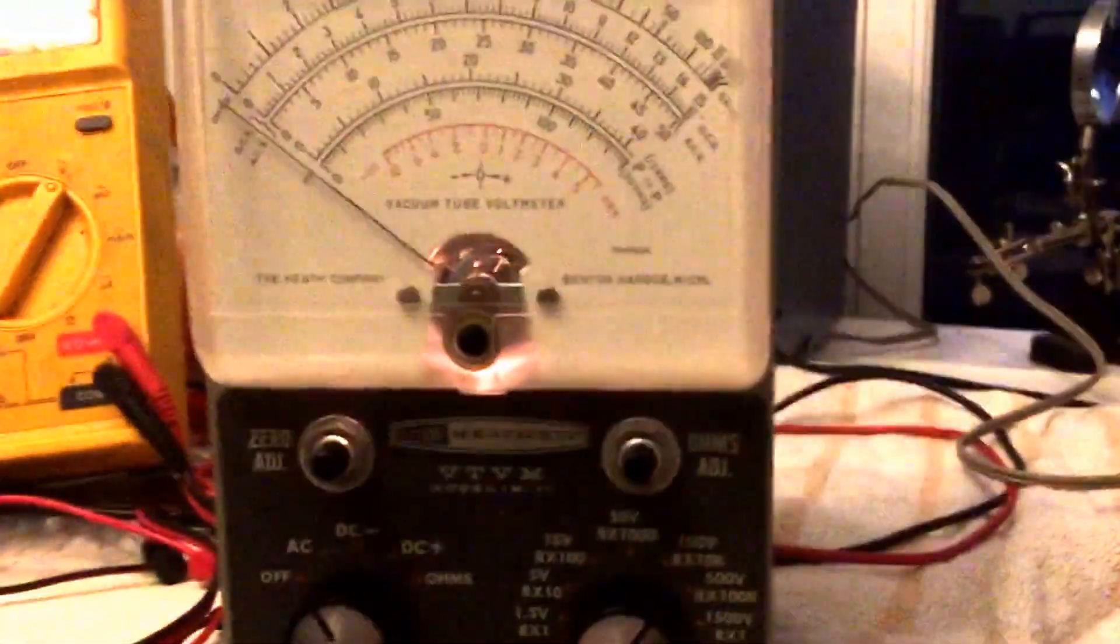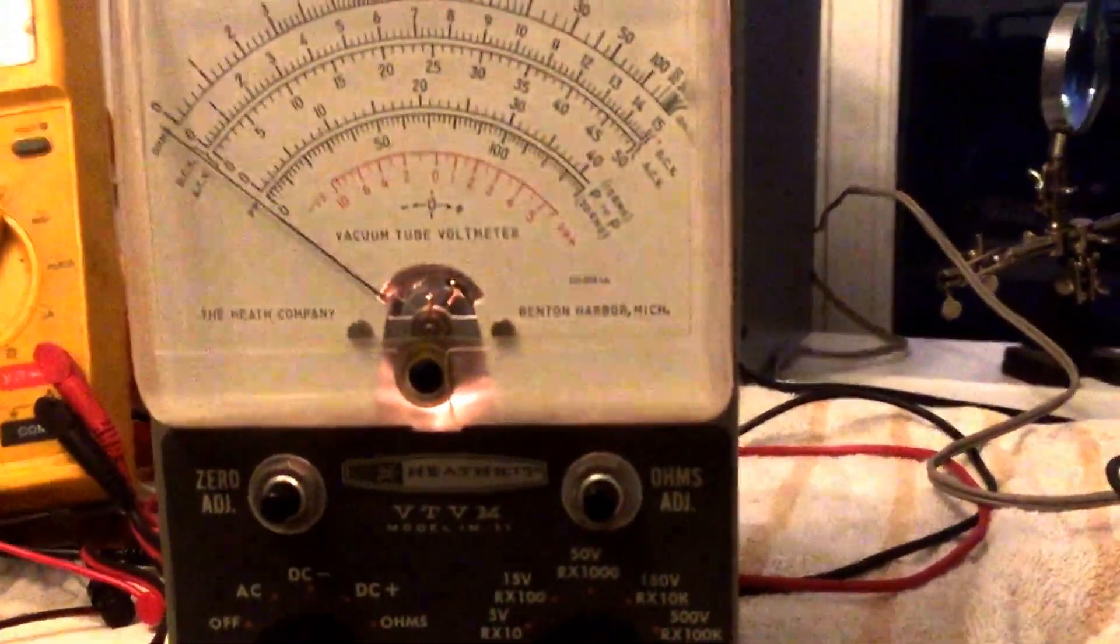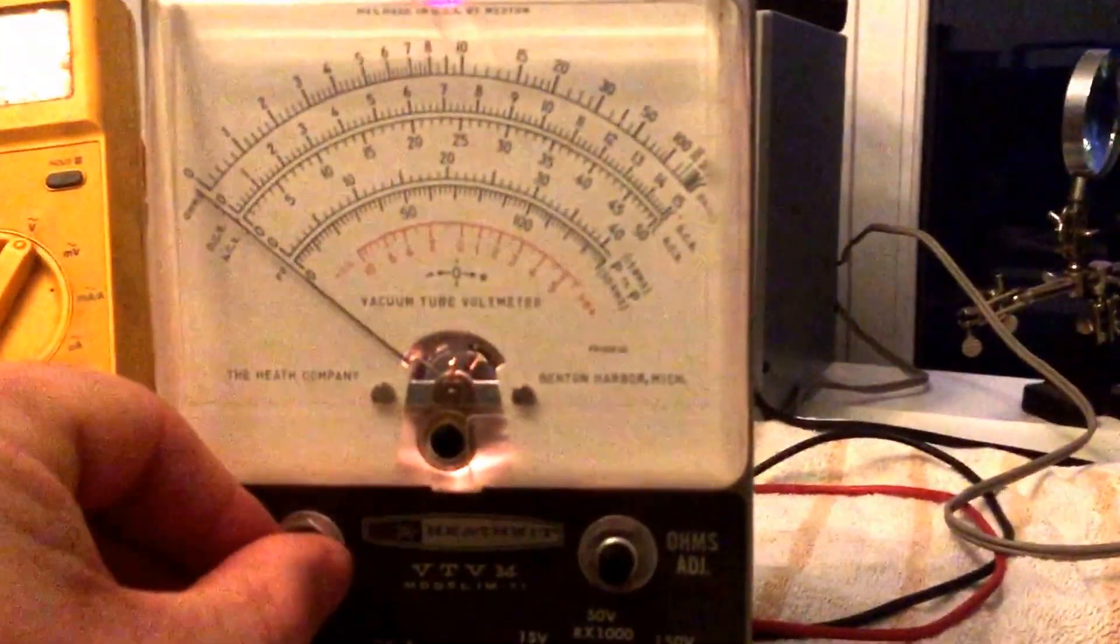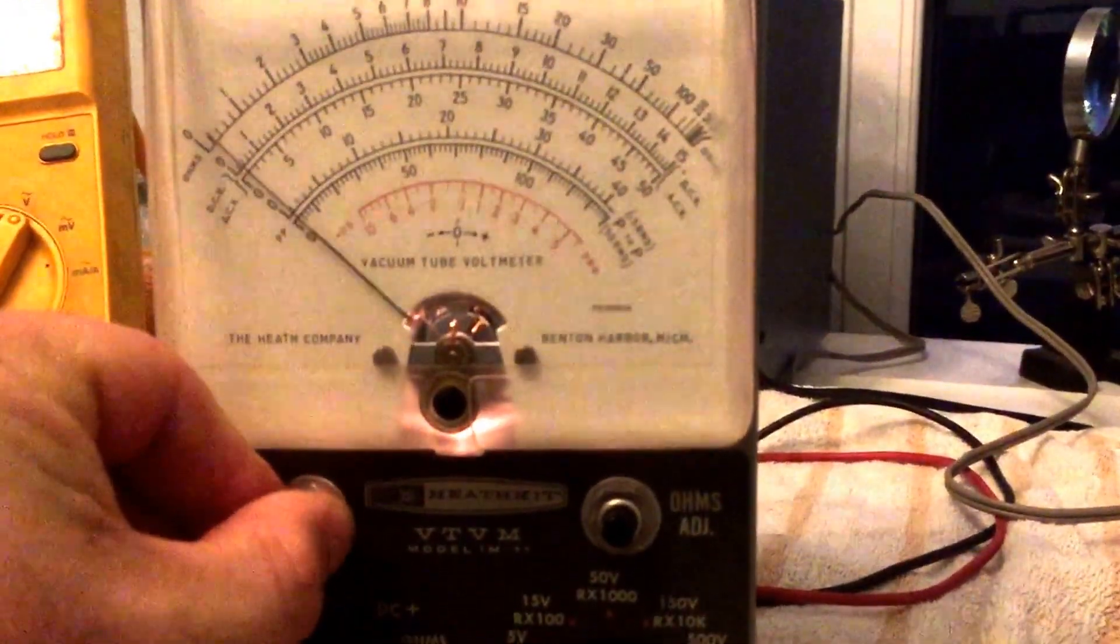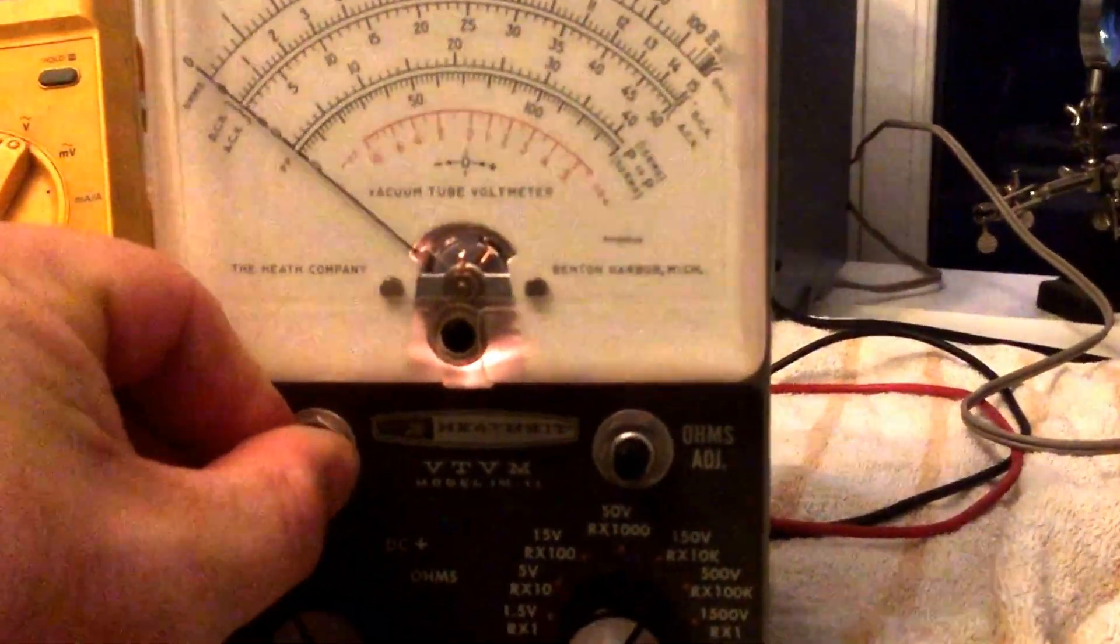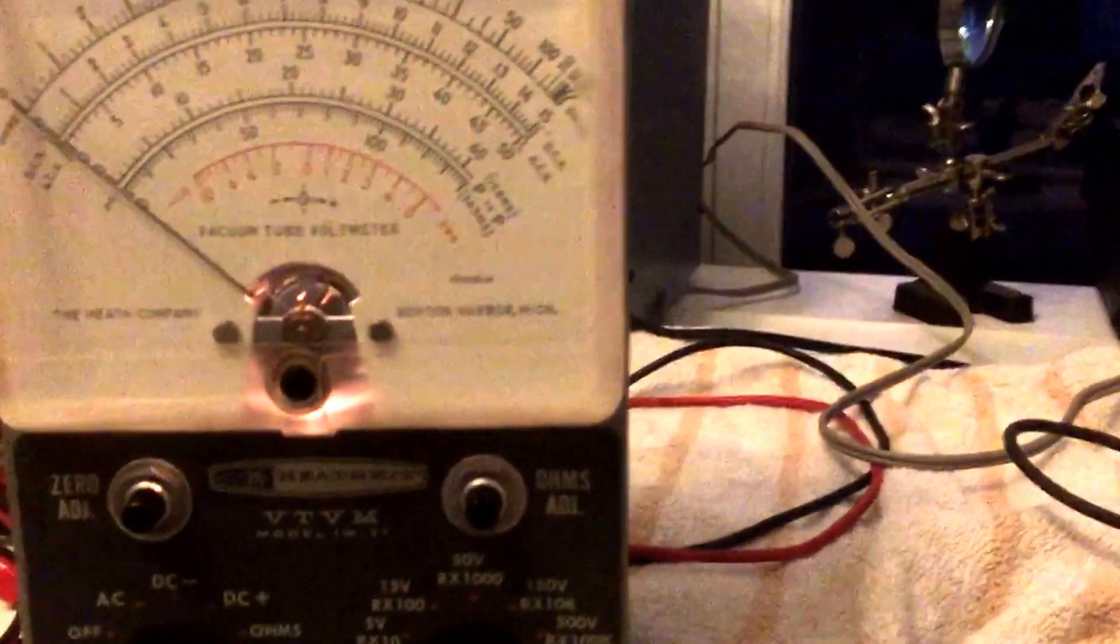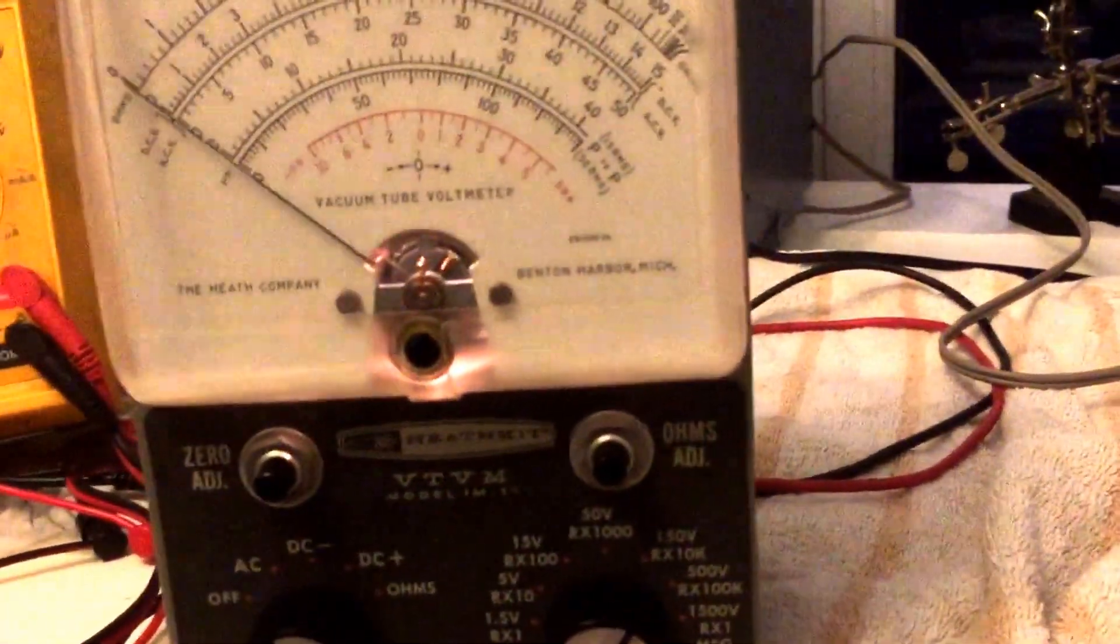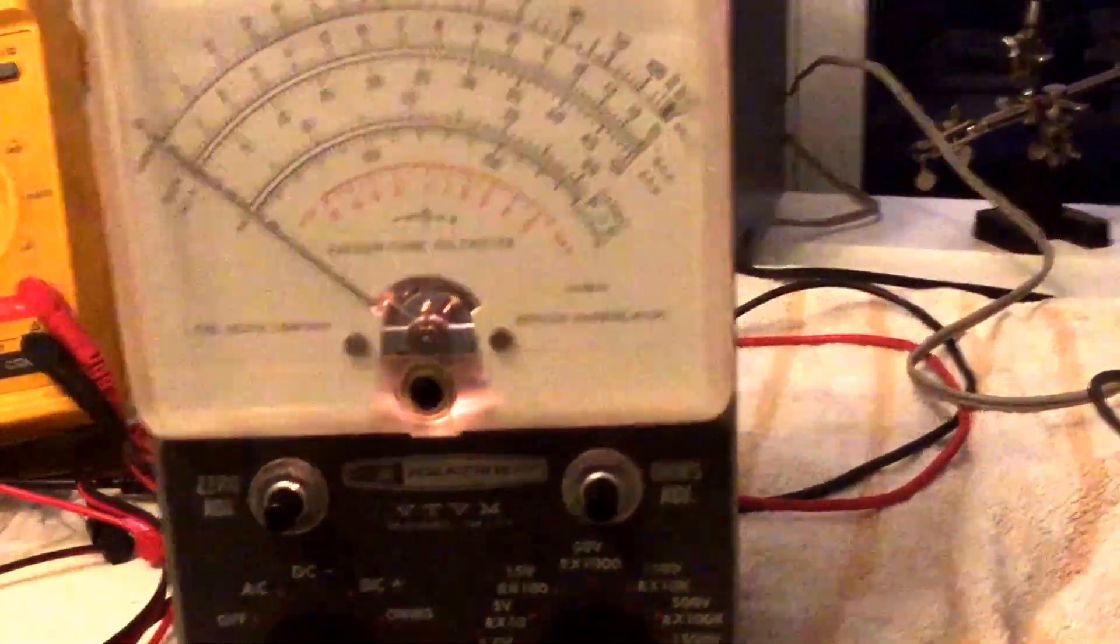There's three potentiometers in the back. A couple potentiometers in the back are used for AC/DC balance, AC calibrate, and DC. One of the things you're supposed to balance is the ability to go from AC to DC with little or no deflection.